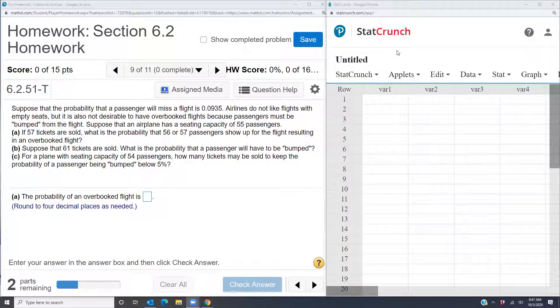This is a homework help video for section 6.2 problem 9. The problem says suppose that the probability that a passenger will miss a flight is .0935. Airlines do not like flights with empty seats, but it is also not desirable to have overbooked flights because passengers must be bumped from the flight.